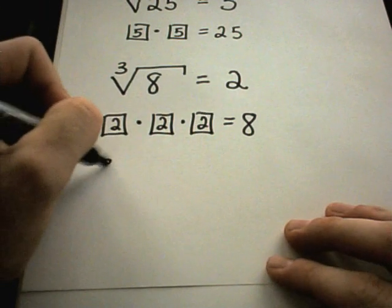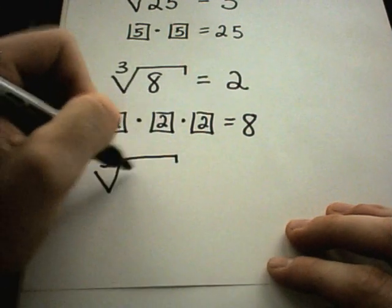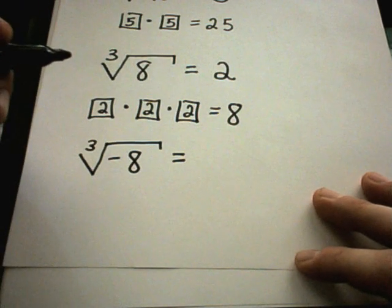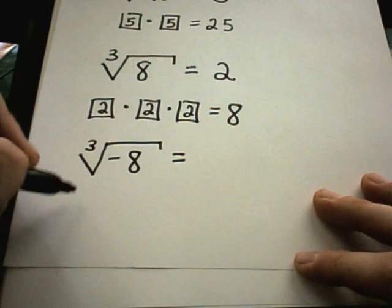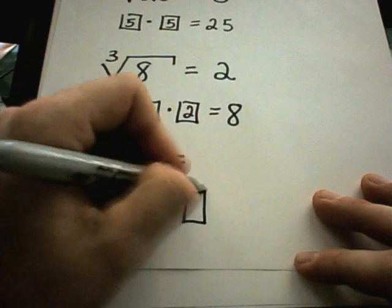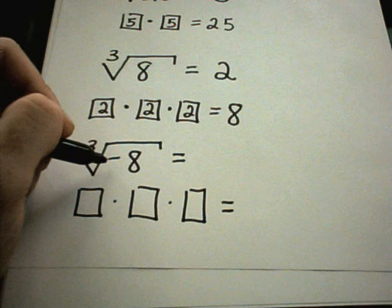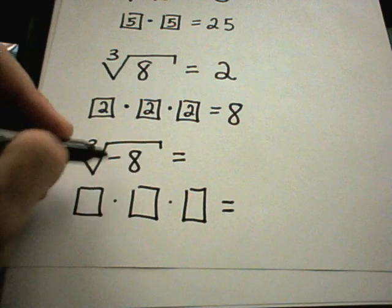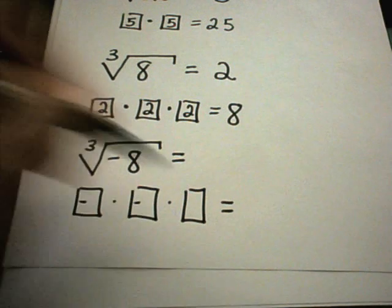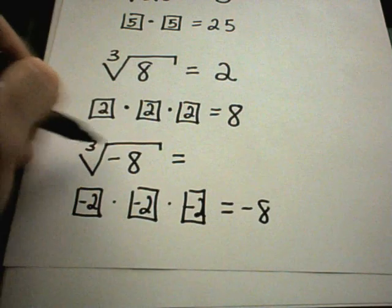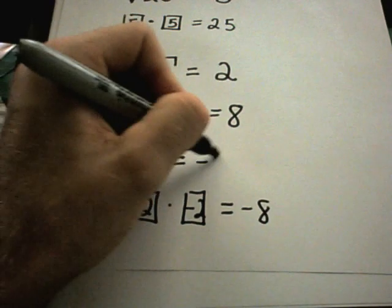If we had the cube root of negative 8, we can have a negative number as a solution. I need the number that I get out to be negative, and if I multiply a number by itself 3 times, the only one that gives a negative is if that number is negative. Notice negative 2 times negative 2 times negative 2 gives negative 8.